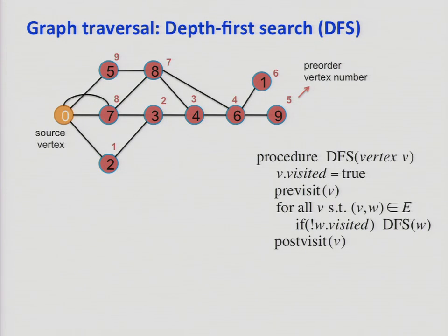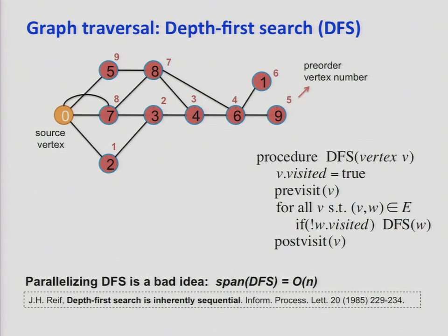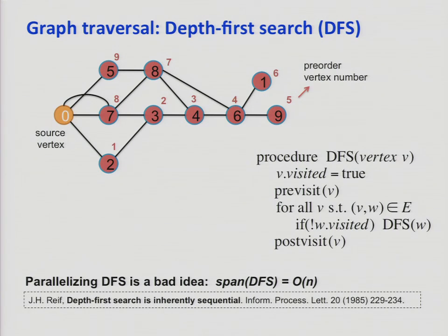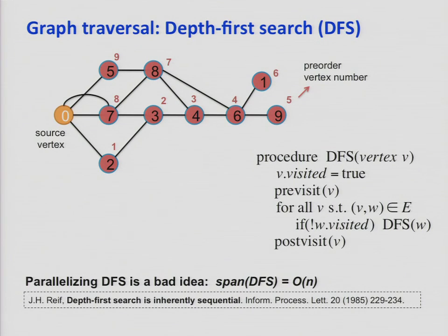Strongly connected components is based on DFS, at least the serial version. However, parallelizing DFS is a bad idea — you can theoretically prove that the span of this computation is linear on the number of vertices. The best parallelism you can get is the number of edges divided by the number of vertices, which for many interesting graphs is a constant. Once that constant matches your processor count, you get no more scaling.